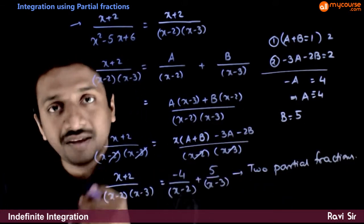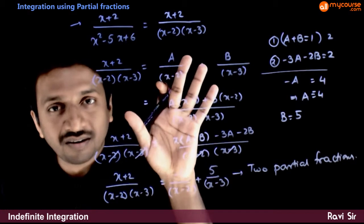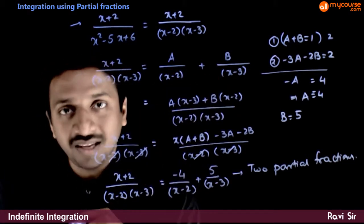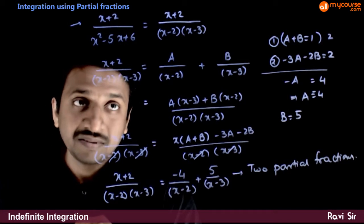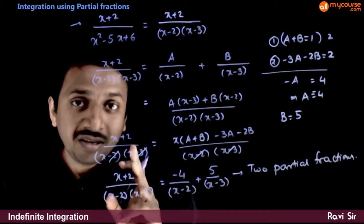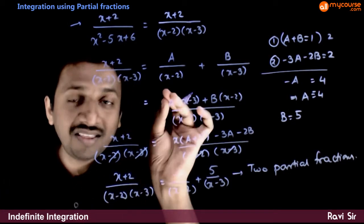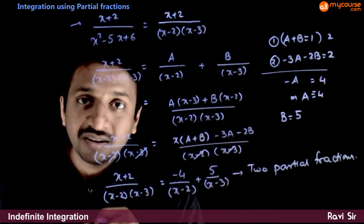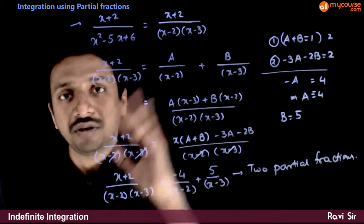The problem here is, in this question you are able to do this splitting very easily. But it's not always necessary that if you arbitrarily choose your partial fractions, you always get the values of a and b.